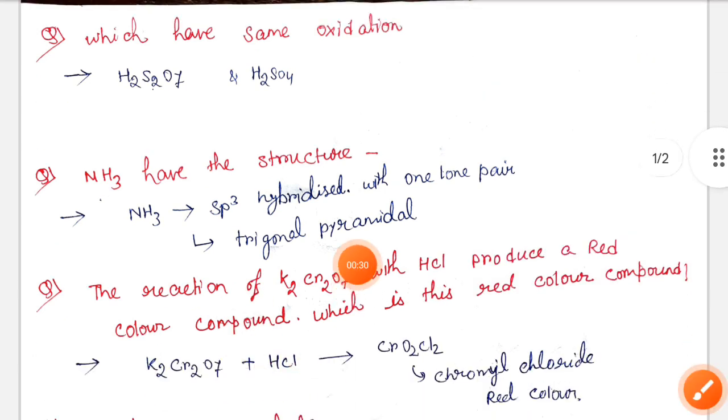Next, ammonia have the structure. So ammonia, if we calculate the hybridization, is sp3 hybridized molecule with one lone pair, so its structure will be trigonal pyramidal.